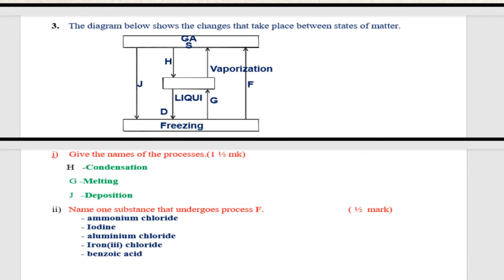And then the last one is benzoic acid. This question is very common. They might bring it in your exam. Name one substance that undergoes process F. Process F is a substance that is ice changing to become gas. What are some of the examples of substance that undergo that process? Because not all substances. Ammonium chloride, iodine, and those others we have mentioned there.